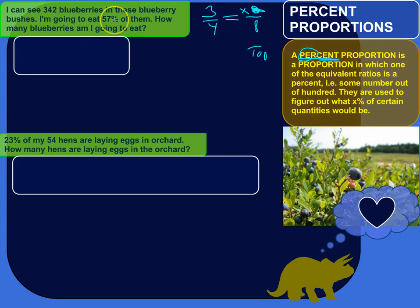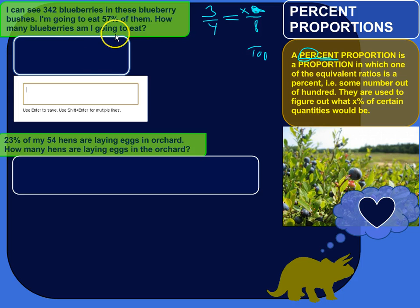So first one, I can see 342 blueberries in these blueberry bushes. I'm going to eat 57% of them. So 57% of the blueberries that I can see. How many blueberries am I going to eat? So let's pose the question, let's rephrase this situation as a question that's a little bit more precise.